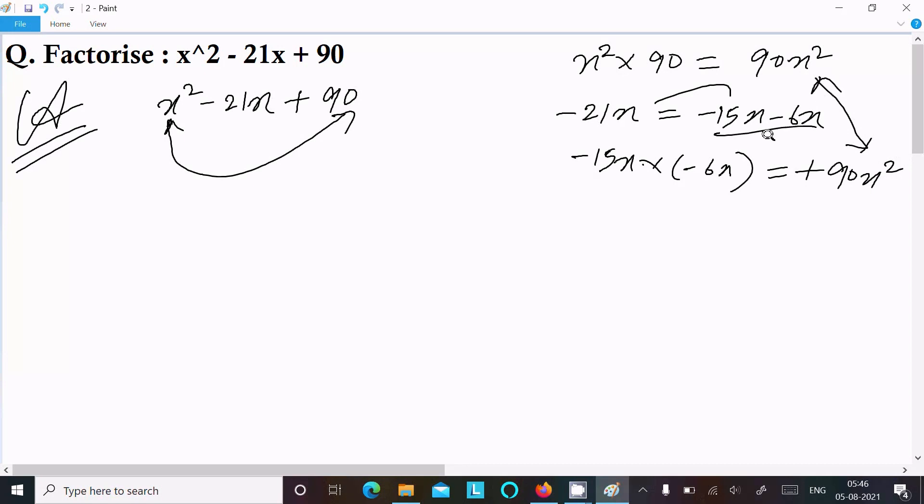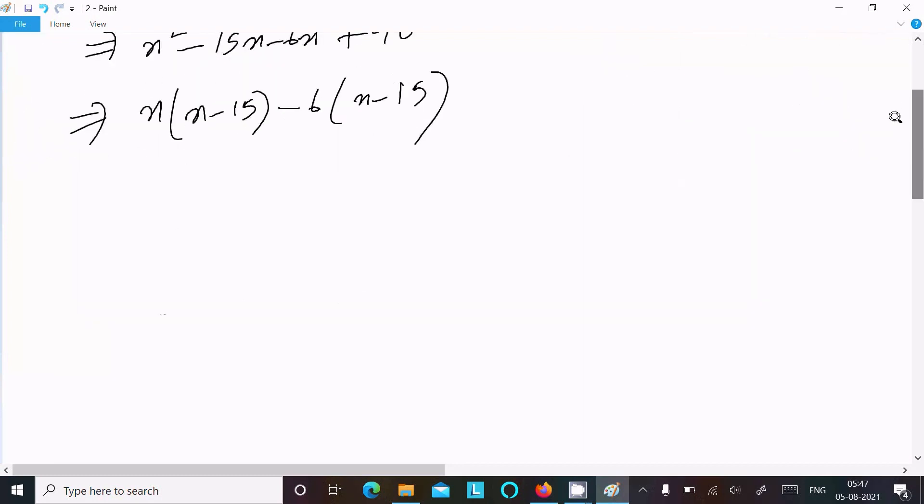Now writing x², in place of 21 we can write 15x - 6x + 90. Take the x common here, x - 15. Minus 6 common, x - 15.